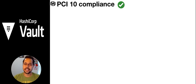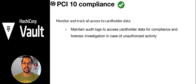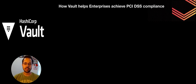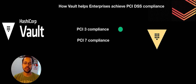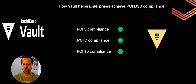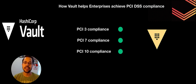PCI 10 compliance is achieved using Vault — you are able to monitor and maintain audit logs for every transaction happening on your credit cards. In case of any unauthorized activity, this information is extremely useful for audit and forensic purposes. So the talk was about how Vault helps enterprises achieve PCI DSS compliance: using Vault we achieved PCI 3 compliance, PCI 7 compliance, and PCI 10 compliance. The core message is that HashiCorp Vault is not just a secrets management system — it has far more capabilities and caters to many industries dealing in the payment space, which covers virtually every industry today.